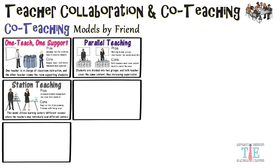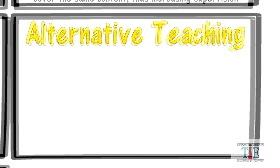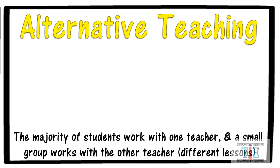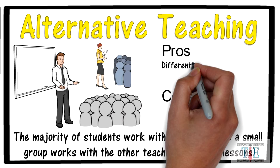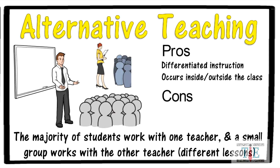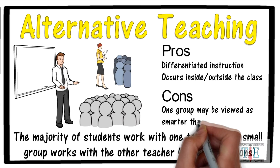Moving on to Alternative Teaching. In this model, the majority of students work with one teacher, and a small group works with the other teacher. Most students are with one teacher, while a small group learns a different lesson with the other teacher. Some pros include differentiated instruction, and teachers can move students inside and outside of the classroom. The con is that one group may be viewed as smarter than the other group.